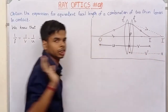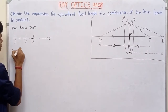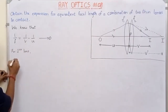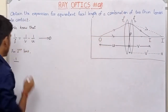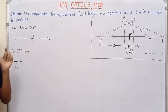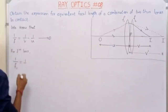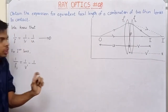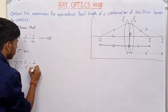For the first lens, focal length is f1. So 1 by f1 is equal to 1 by v-dash minus 1 by u. Here v-dash is the image distance and u is the object distance.